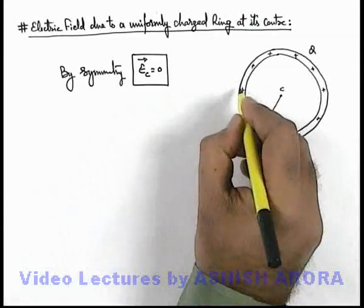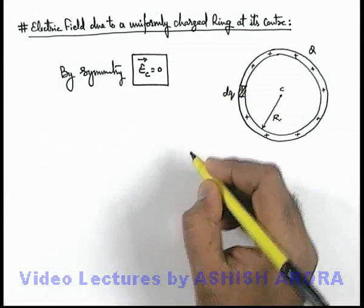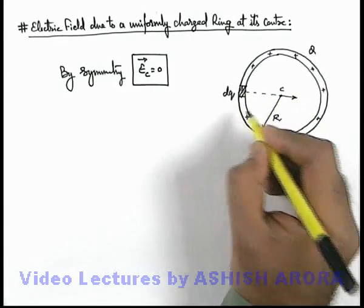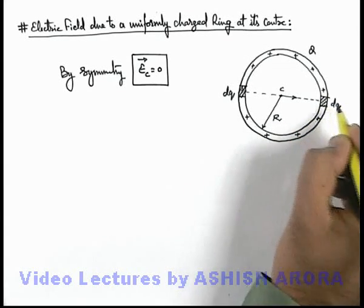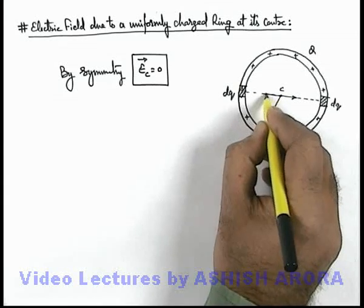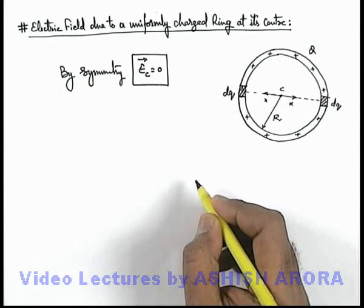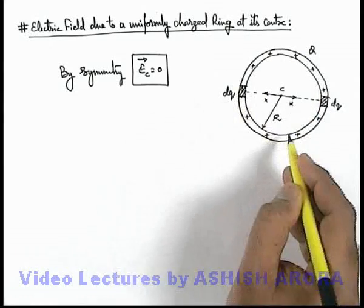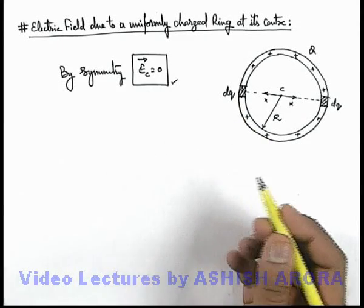This is because if we consider a small element having a charge dq on the ring, then due to dq the electric field at the center will be directed away from it. Another dq which is directly opposite will have an equal and opposite electric field at the center, and these two electric fields will cancel each other. Similar phenomena will happen for all elements of the ring, due to which the net electric field at the center can be directly written as zero.